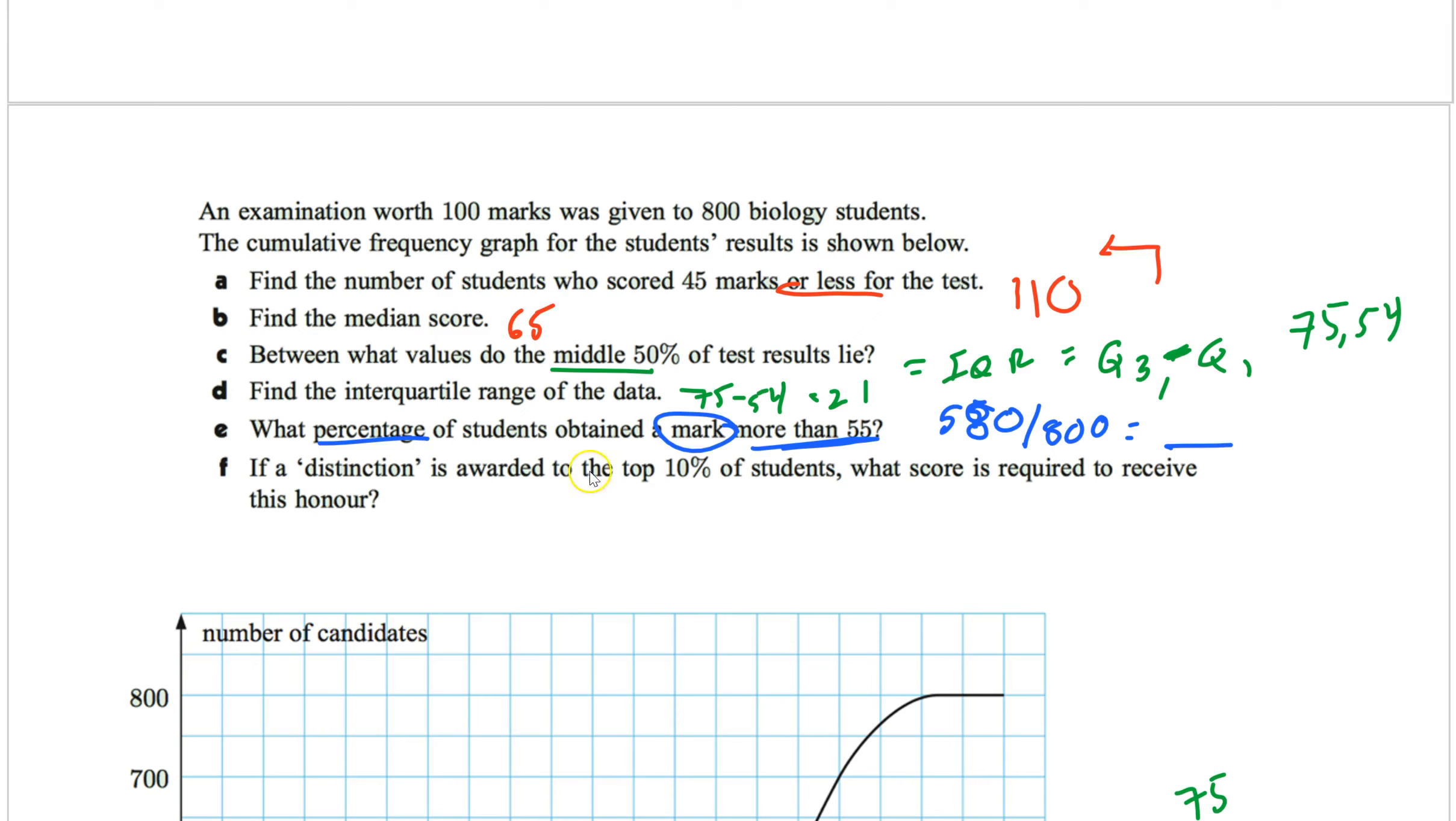And the last question on this problem. If a distinction is awarded for the top 10% of students, notice from the top 10%, what score is required to receive this honor? So what mark do you need to get if you want to be top 10? So again, top 10 means from the top. So first, let's figure out what 10% is. 10% times 800. And I get 80. So the top 80 students. But again, that's from the top. So 800, go from the top. Minus 80 is 720.